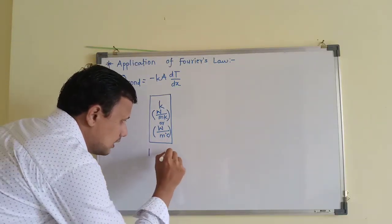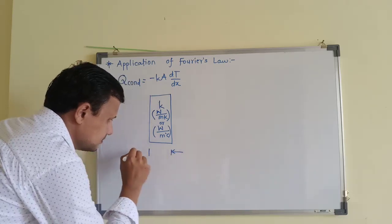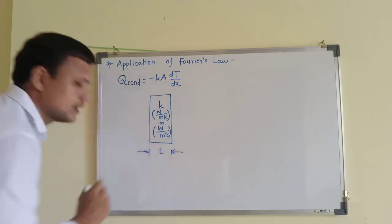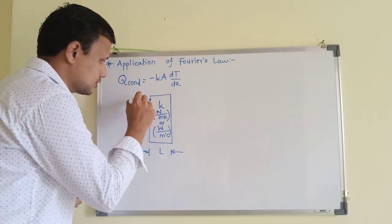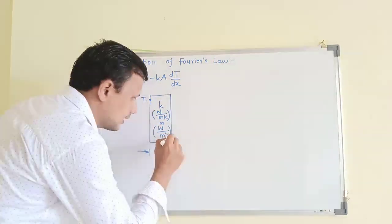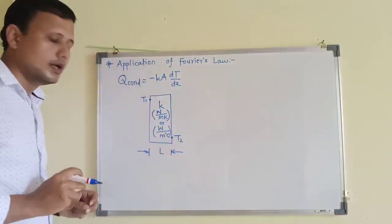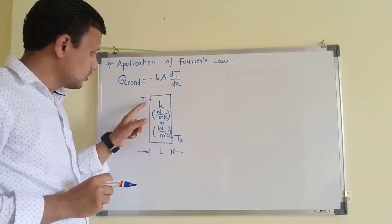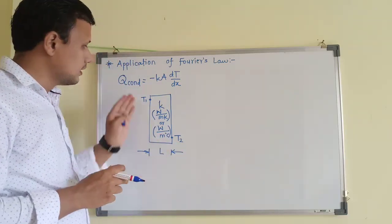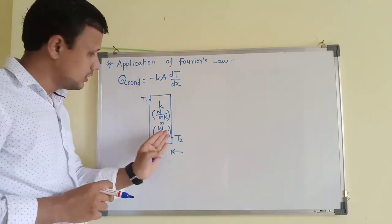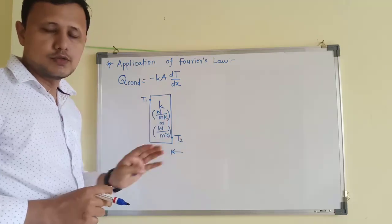Then let us consider that L is the thickness of this wall. Left hand side of the wall is at a temperature T1 while right hand side of the wall is at a temperature T2. I have purposely written T1 on the upper side and T2 on the lower side to indicate that let us say T1 is the higher temperature T2 is the lower temperature to which wall is subjected.